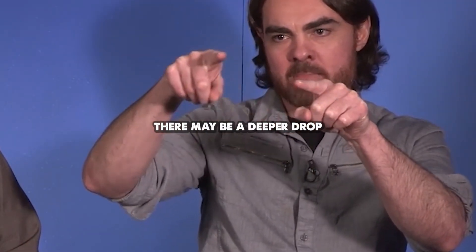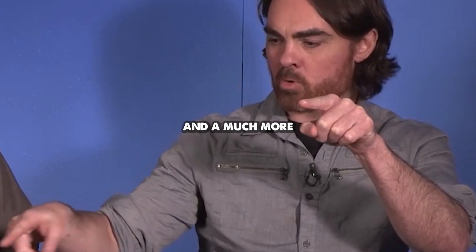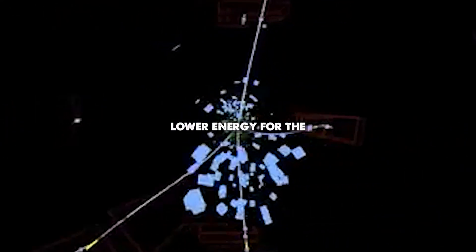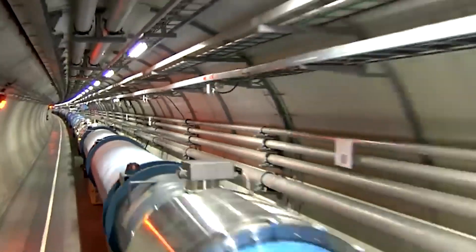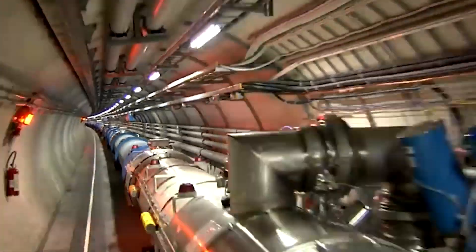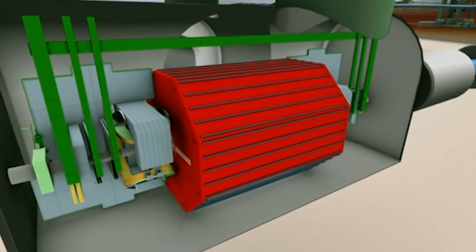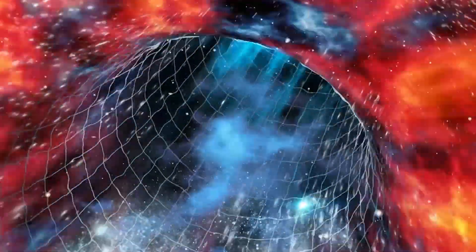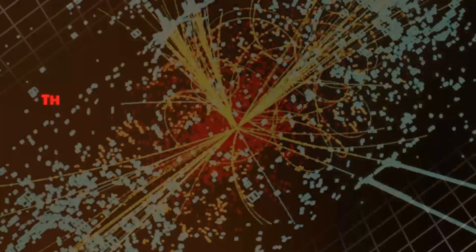In this hypothetical scenario, a quantum fluctuation or high energy event could trigger a transition to a true vacuum, leading to the catastrophic collapse of the fabric of the universe. This event, known as vacuum decay, could spread at the speed of light, erasing everything.